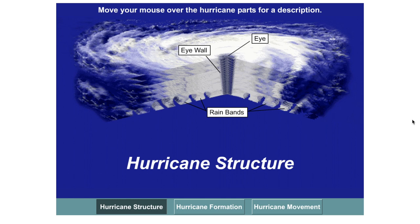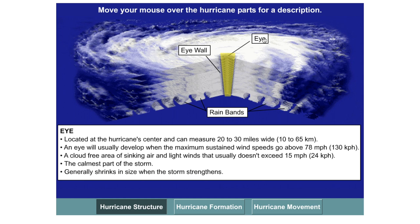In this section, we can see the structure of a tropical storm and it's separated into three different parts. Firstly, the eye of the storm — that characteristic center of it. This is located right in the center of the whole storm front. It normally measures about 20 to 30 miles wide, or 10 to 65 kilometers. This is where you have the highest sustained wind speeds, which have to exceed 130 kilometers an hour if it is known as a hurricane. It's largely a cloud-free area because the air is sinking and it is probably the calmest part of the storm. Generally speaking, the eye of the storm shrinks the stronger the storm becomes.